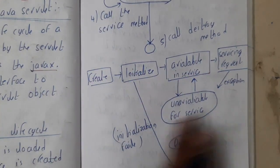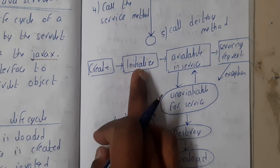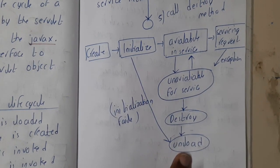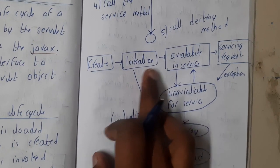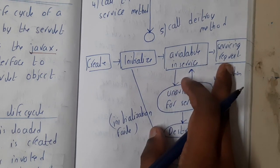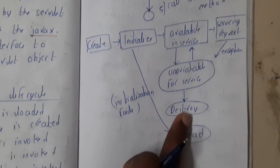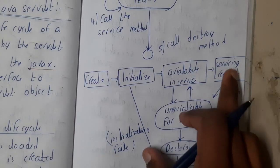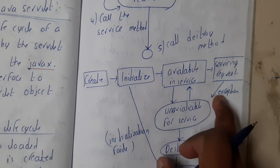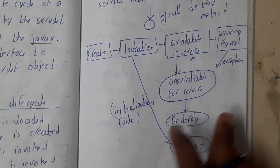There is another detailed flowchart. First you create it, then initialize it. Initialization might fail — if there is a failure you need to unload it. Assuming success, you check for availability: if the service is available, you start the request, complete it, and then destroy it. If unavailable for service, you destroy and unload it. Even while completing requests, if an exception occurs, you move to unavailable, destroy, and unload. The end result is always destroying.